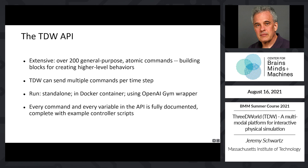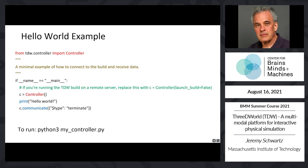Now that we have some understanding of the system architecture and TDW's API, let's look at a minimal controller example — our Python version of hello world. We instantiate a controller and then send commands using the communicate command. Each command is a JSON object that has matching code in the build. The build deserializes each command and executes the associated process. In this case, the only command we're sending is the terminate command, which terminates the build. When a controller is run, it checks if the correct version of the build is already on the computer, downloads it if not, then launches the build. The controller also checks whether your version of TDW is the most recent.